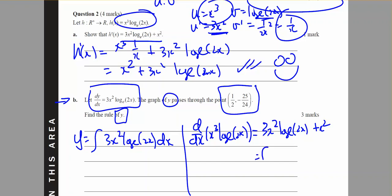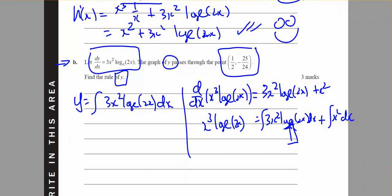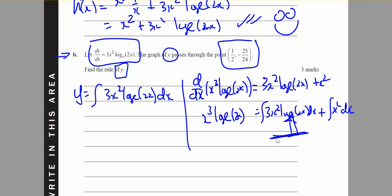So the integral of 3x squared log base e of 2x dx plus the integral of x squared dx should equal x cubed log base e of 2x. So I'm looking for this, I can see that there, so the integration by recognition says that this equals x cubed log base e of 2x minus the integral of x squared dx.